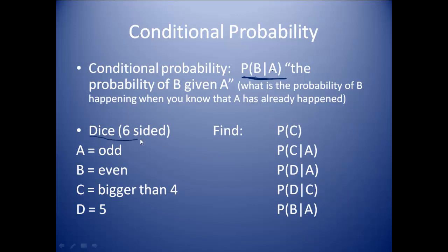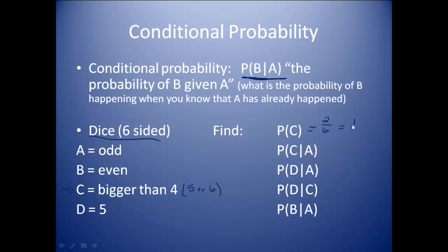We're going to use a regular six-sided die. Event A is rolling an odd. Event B is rolling an even. Event C is rolling something bigger than 4, so this would be rolling a 5 or a 6. And event D is rolling a 5. The first question is: what's the probability of C? Well, rolling something bigger than 4 means I have to roll a 5 or a 6. There are two ways out of 6, so I have a one-third chance.